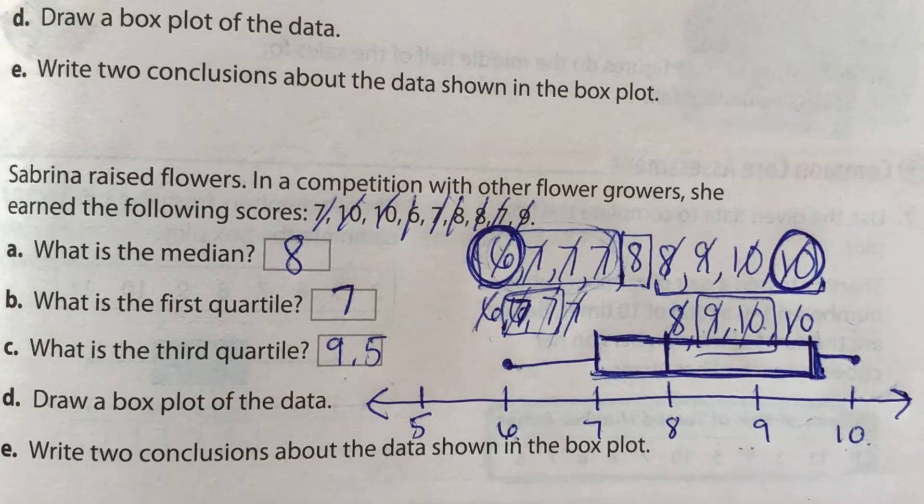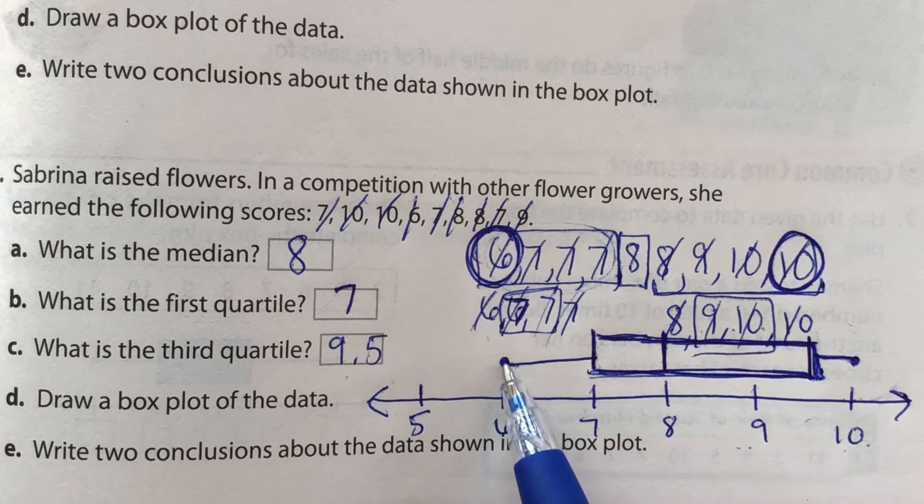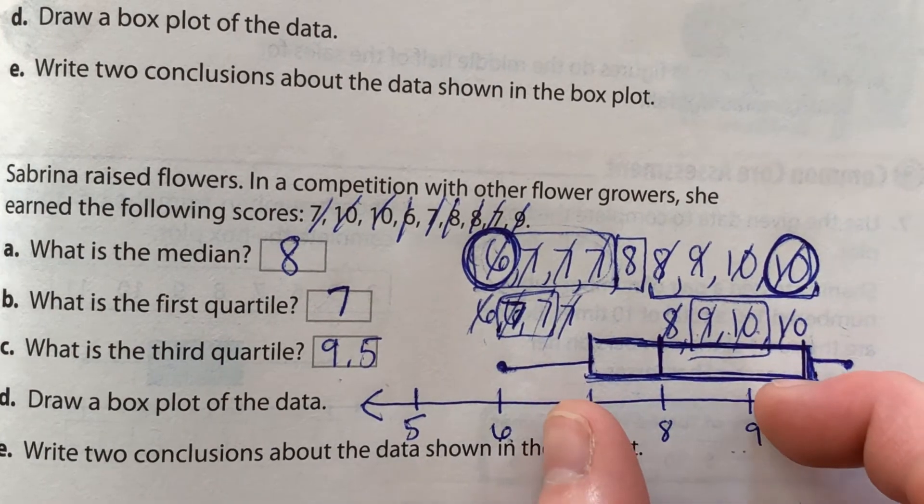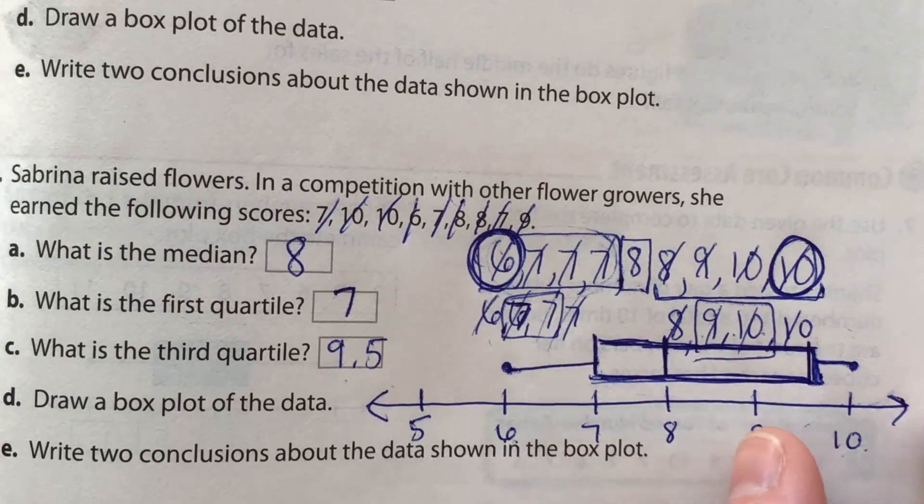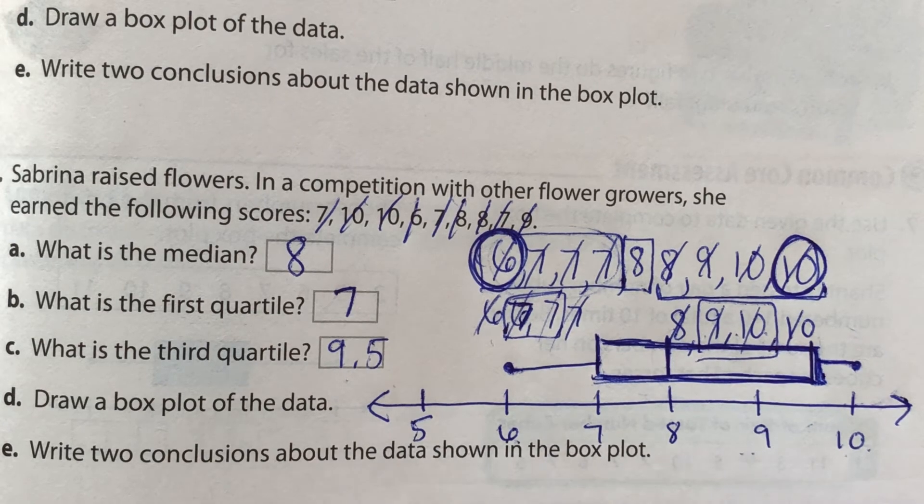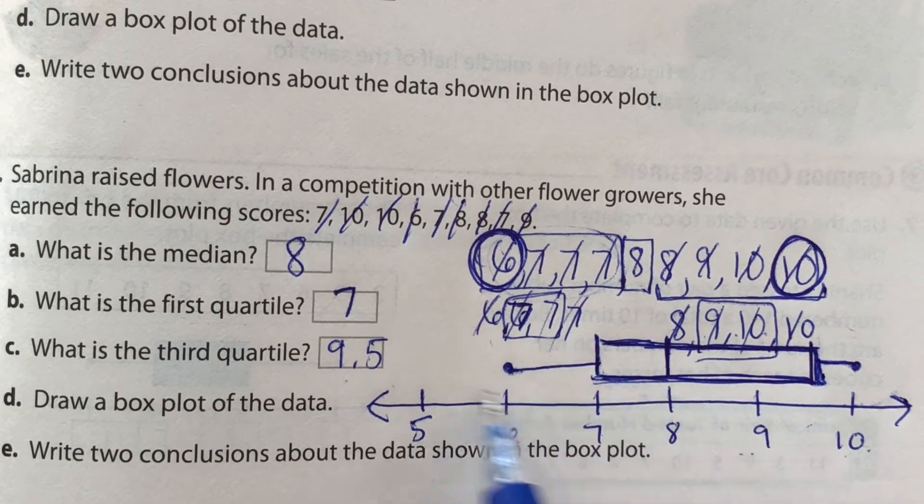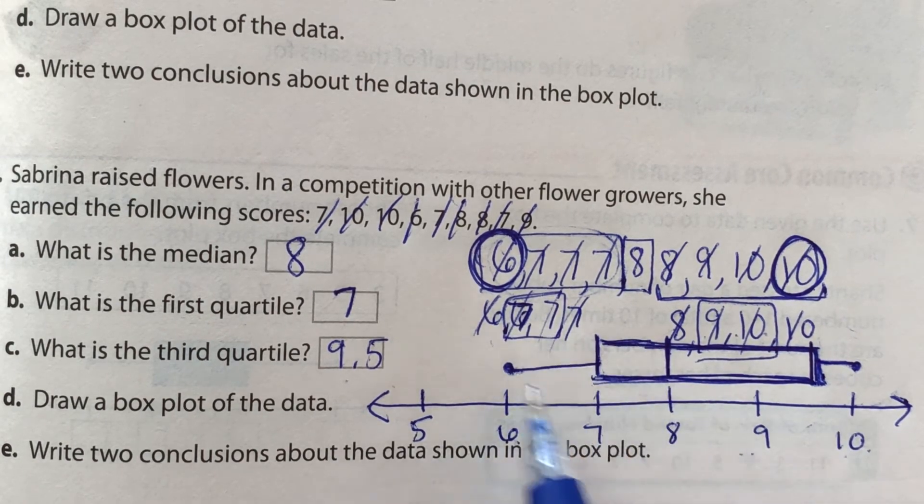And in reverse, you can tell that Sabrina got less lower number scores. The lower number scores weren't as frequent as the higher number scores because this box is more focused to the higher numbers. It's leaning towards this way instead of going to the lower numbers. If this box was all the way to the lower numbers, and there was a long line this way, you would know Sabrina got lower scores more than higher scores.